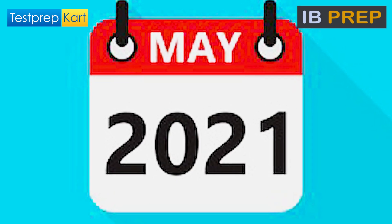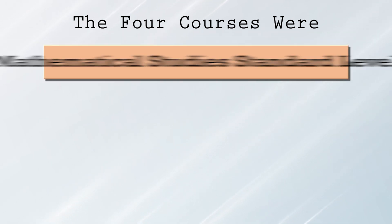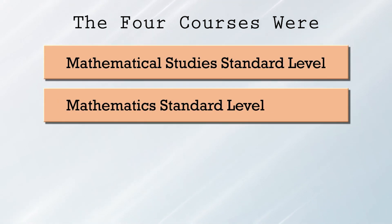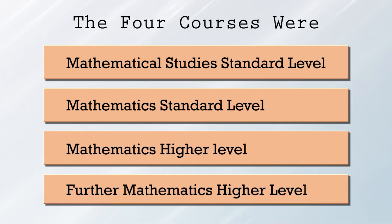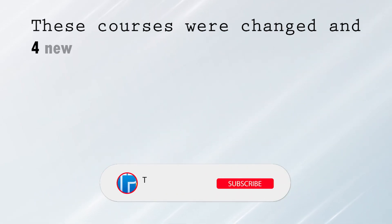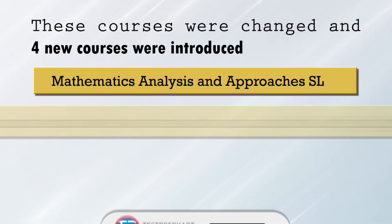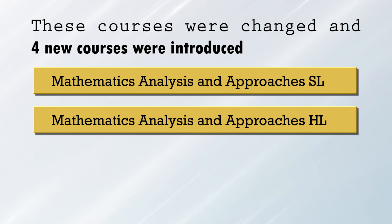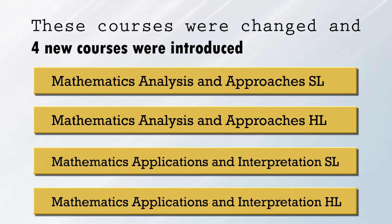This was implemented from the May 2021 session. Earlier, the four courses were Mathematical Studies Standard Level, Mathematics Standard Level, Mathematics Higher Level, and Further Mathematics Higher Level. These courses were changed and four new courses were introduced: Mathematics Analysis and Approaches SL, Mathematics Analysis and Approaches HL, Mathematics Applications and Interpretation SL, and Mathematics Applications and Interpretation HL.